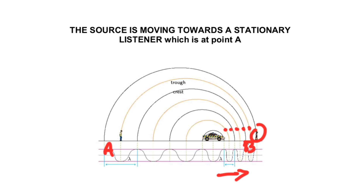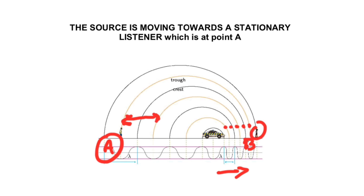And you, at point A, if there is a source moving away from you, then you are going to experience a lower frequency, because the distance between two successive troughs is increasing. We have a longer wavelength and, as a consequence, a lower frequency. This change in the frequency observed because of relative motion between a sound source and the listener is what we refer to as the Doppler effect.